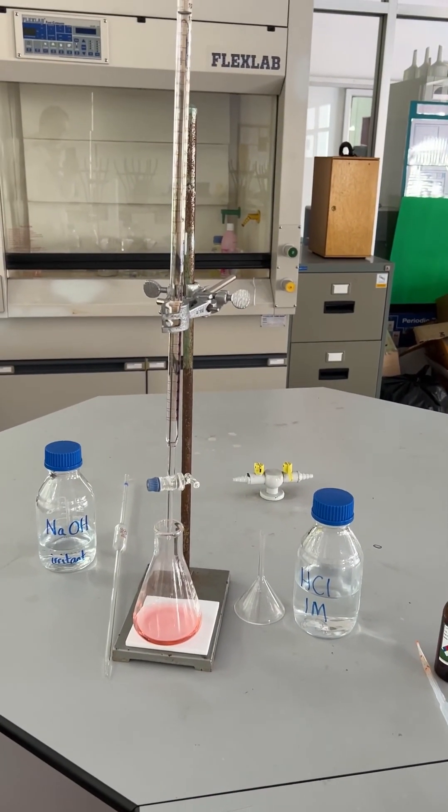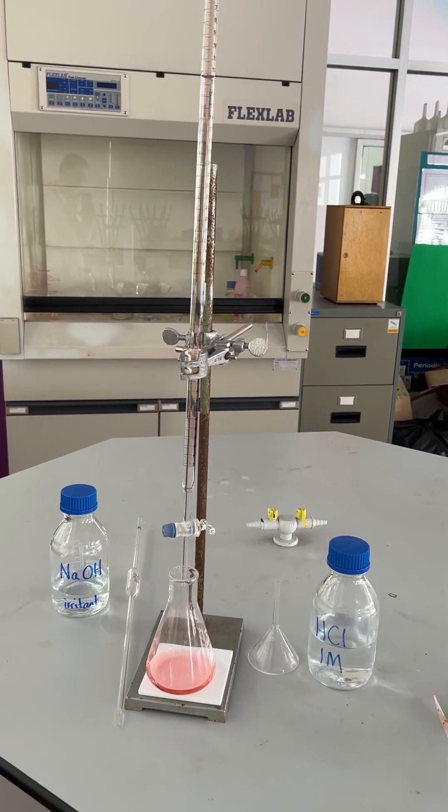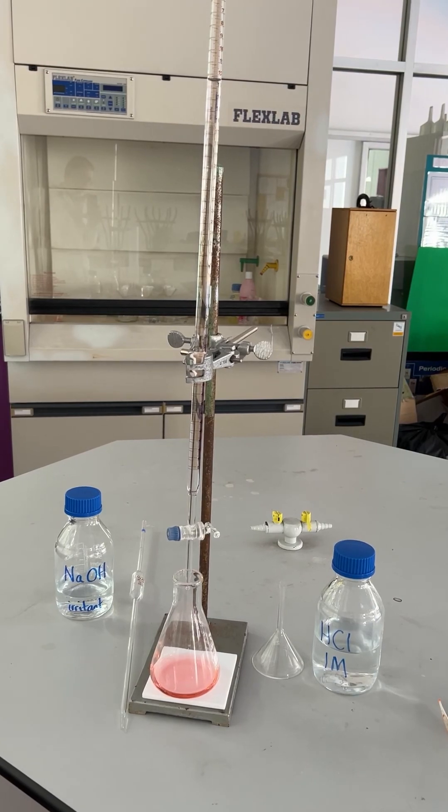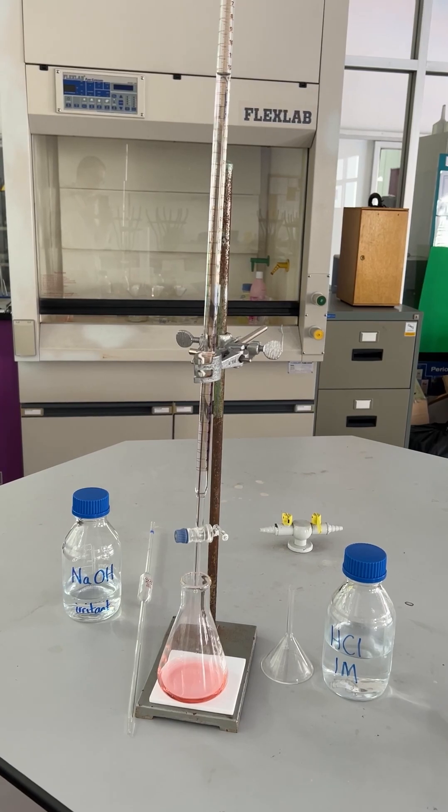So we need to repeat that titration so that we get two readings within 0.1 cubic centimeters. The titration of hydrochloric acid against sodium hydroxide using methyl orange indicator.